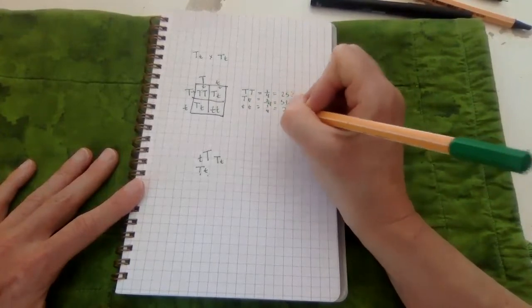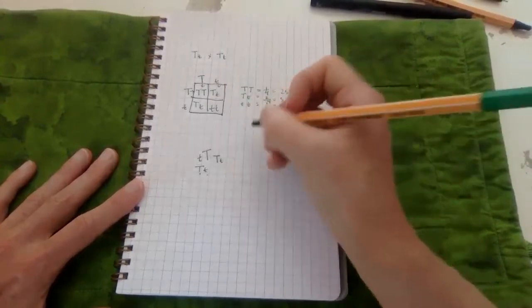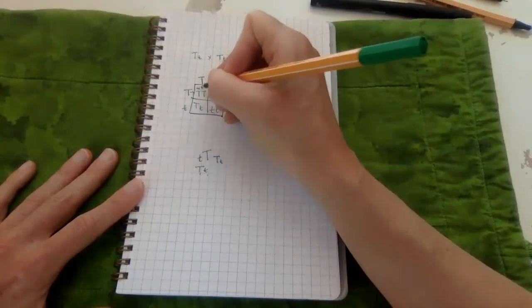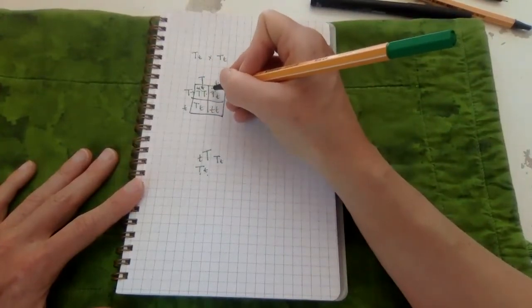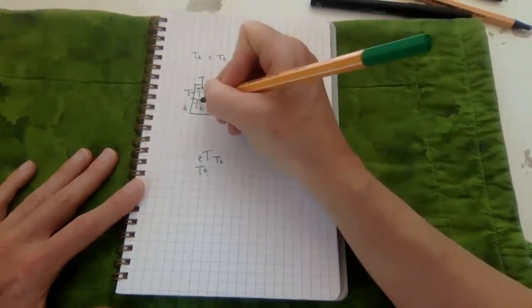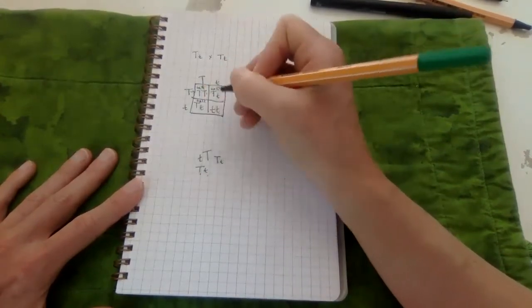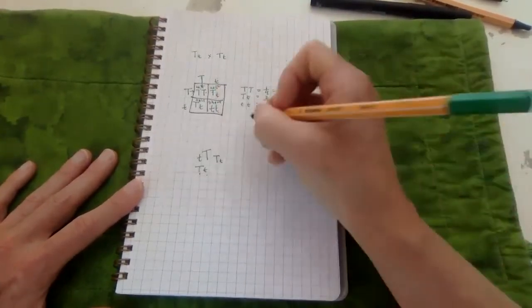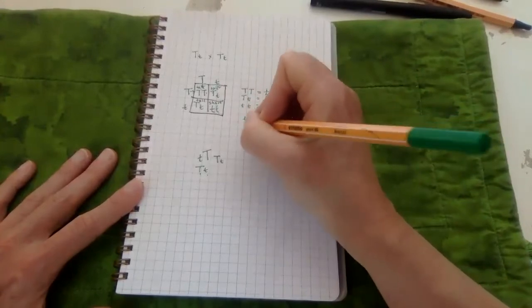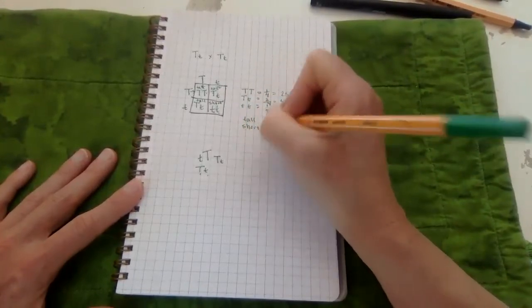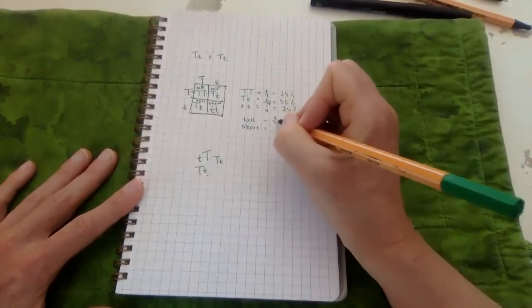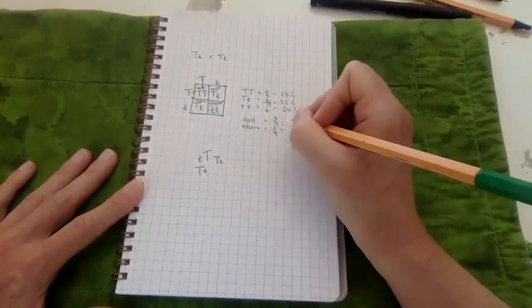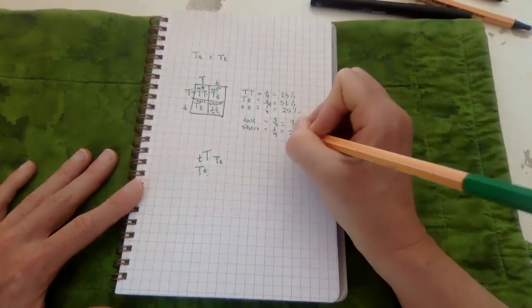Now for phenotypes. Capital T capital T is going to be tall. Capital T lowercase t: capital T is dominant, so tall. Lowercase t lowercase t: this is homozygous recessive, so that one is going to be short. Here we have tall and short. There are two possibilities: three out of the four are tall, one out of the four is short. That would be 75 percent and 25 percent.